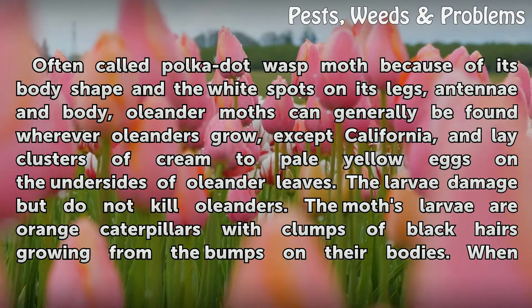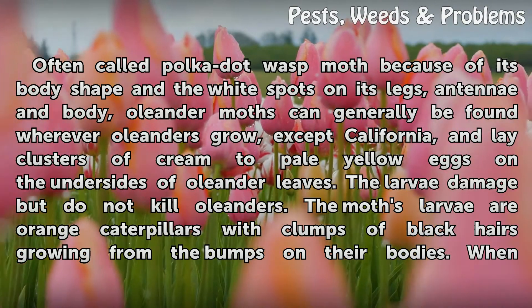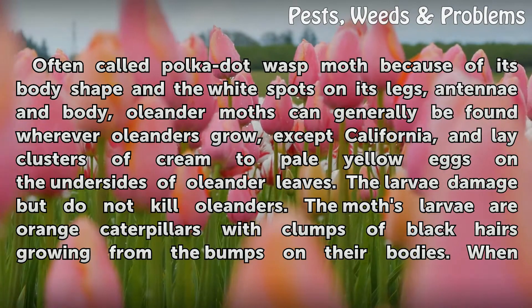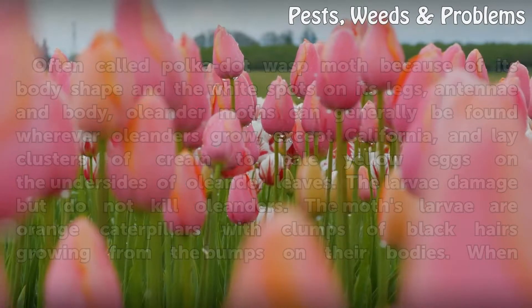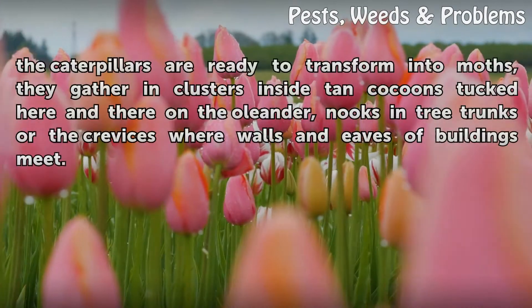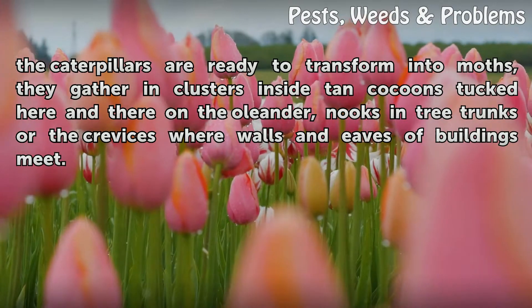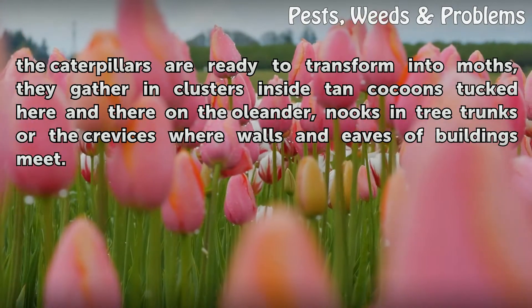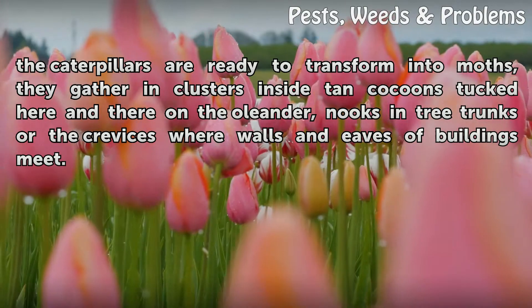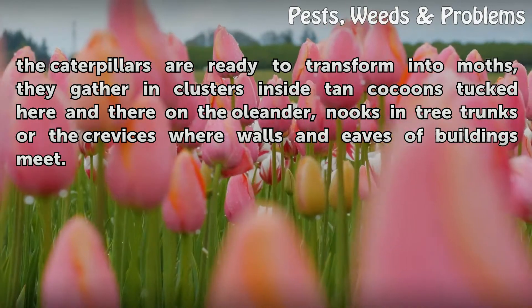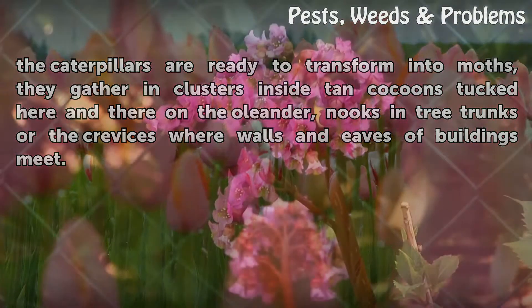The larvae damage but do not kill Oleanders. The moth's larvae are orange caterpillars with clumps of black hairs growing from the bumps on their body. When the caterpillars are ready to transform into moths, they gather in clusters inside cocoons tucked here and there on the Oleander, in nooks and tree trunks or the crevices where walls and eaves of buildings meet.